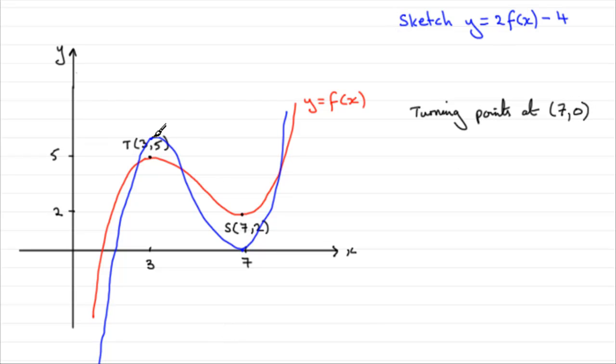And where's the other turning point? Here it is up here. Now remember that it was originally at 3, 5. We did 2f of x, so it went to 3, 10. And then we pulled it down 4 units. So that will now be at this new point, which we'll mark in, is 3, 6.